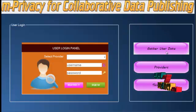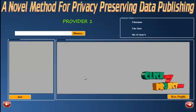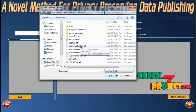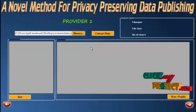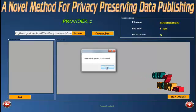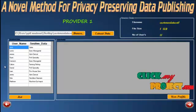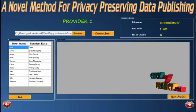Let's see how to import the user data by clicking the 'Get User Data' button. This is the Provider 1 page, where we can get user data from the datasets. To import the dataset, click the browse button and an open file dialog will be shown. Select the customer details dataset and click open. Then click the 'Extract Data' button. After the process is completed, click OK. The file name and number of users are listed here. The list button is used to view the data in the Provider 1 database. These are the usernames and sensitive data. To view the whole data in the Provider 1 database, click the user profile button.